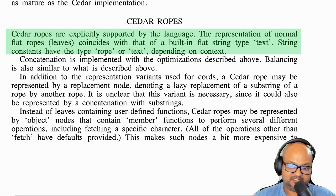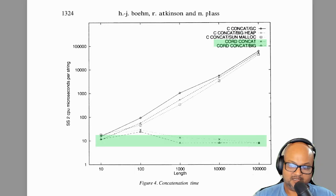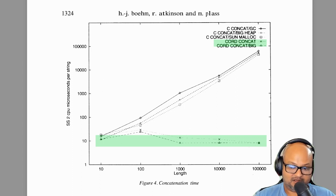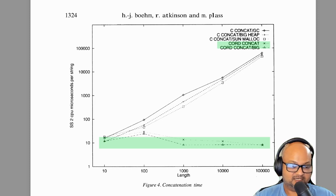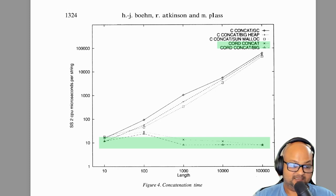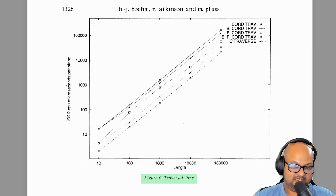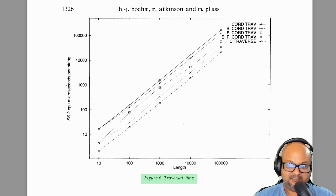The authors used this representation in the Cedar language, a programming language built at PARC in the late 80s and early 90s, as the built-in string type, and got some interesting performance numbers. Looking at the concatenation time graph — with string length on the x-axis on a log scale, and CPU time on the y-axis also on a log scale — the lines for the traditional array representation are order n, so concatenation time grows linearly with string size. But the highlighted lines for the rope representation do much, much better: concatenation time is not growing linearly with string size. Traversal time is still linear as expected, though their implementation still performs relatively better than the array representation.